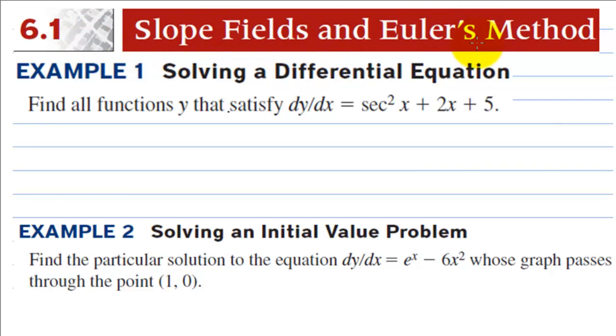This is section 6-1 on slope fields and Euler's method. In example 1, we're solving a differential equation. Find all functions y that satisfy dy/dx equals this function. So we're going to multiply both sides by dx.